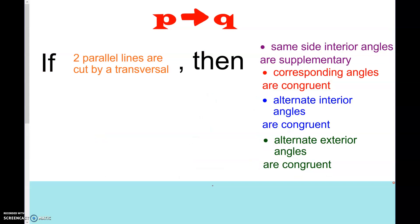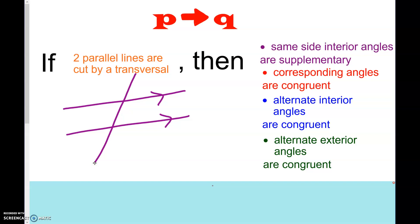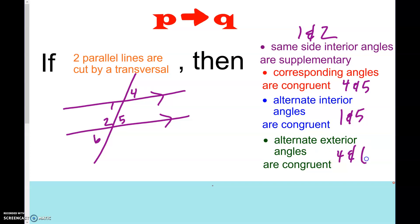In the last section, 3-2, we talked about if we have two parallel lines cut by a transversal, then we can conclude: same side interior angles are supplementary — so 1 and 2. Corresponding angles are congruent — so 4 and 5. Alternate interior angles are congruent — so 1 and 5. And alternate exterior angles are congruent — so 4 and 6.